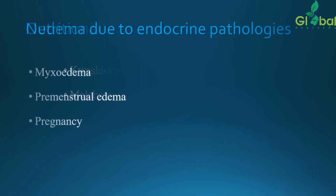Other categories of edema due to endocrine pathologies include myxedema, premenstrual edema, and pregnancy-related edema. As a result of thyroid imbalance — hypothyroidism or hyperthyroidism — myxedema type conditions will be present, along with edema of the eyeballs. Premenstrual edema affects women at the premenstrual stage. Pregnancy also causes edema as a result of hormonal imbalance with respect to the endocrine glands.